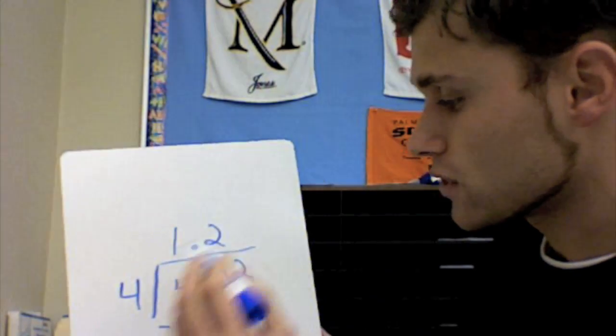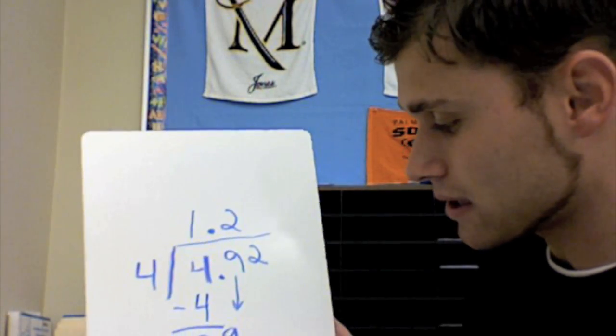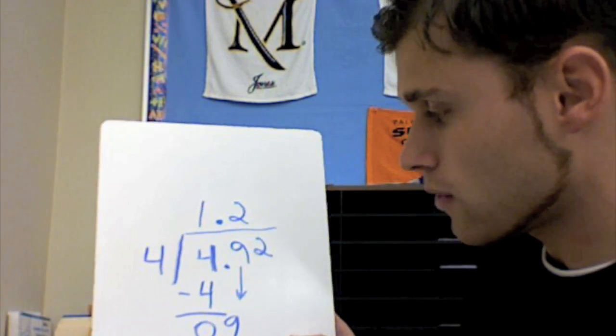Okay, now, twice, 2 times 4 is 8. Subtract that, and you get 1.